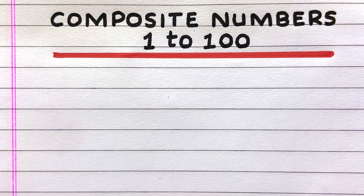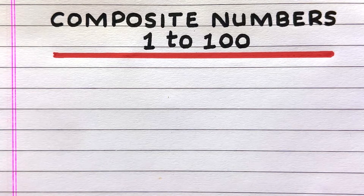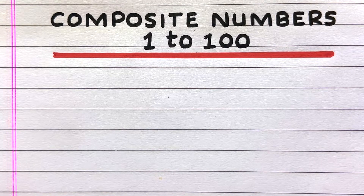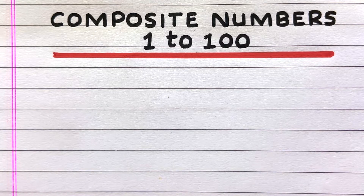Hello everyone, welcome to my channel. A composite number is a natural or positive integer with more than two factors. In this video, I'll write composite numbers between 1 to 100.